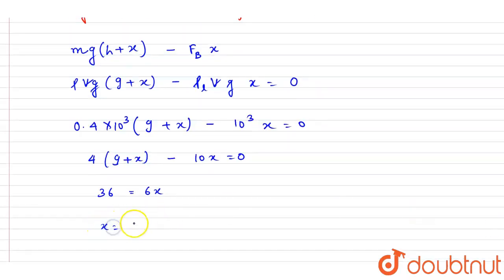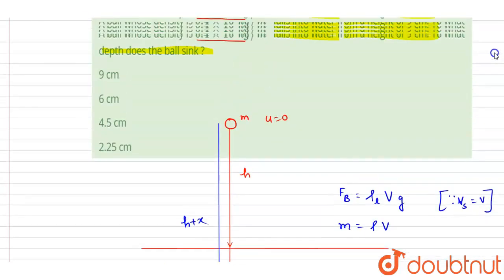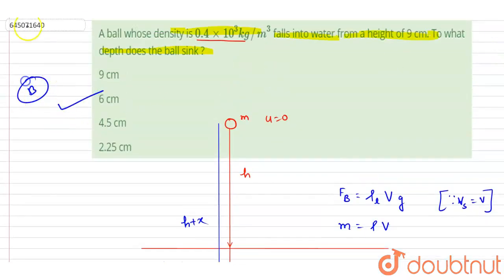So finally I will write down x is equals to 6 centimeter, and this is the answer of this question. Now you can check for the option. 6 centimeter, B is the correct answer. Thank you.